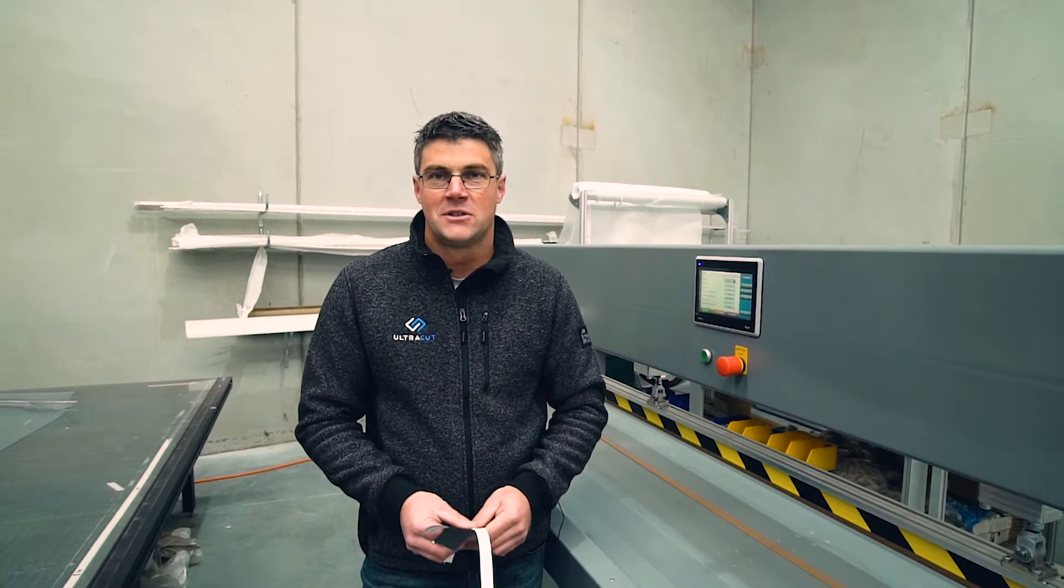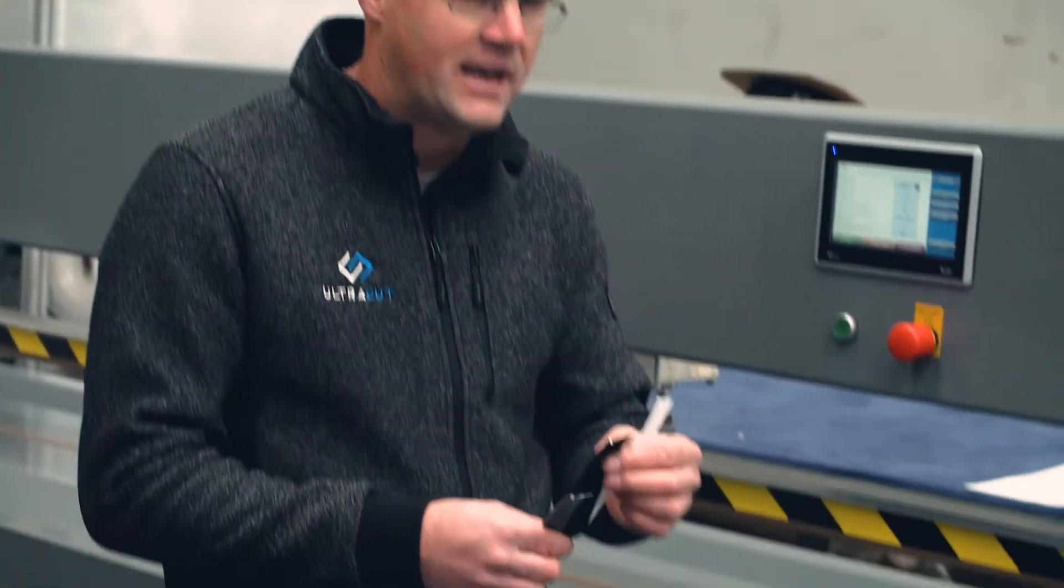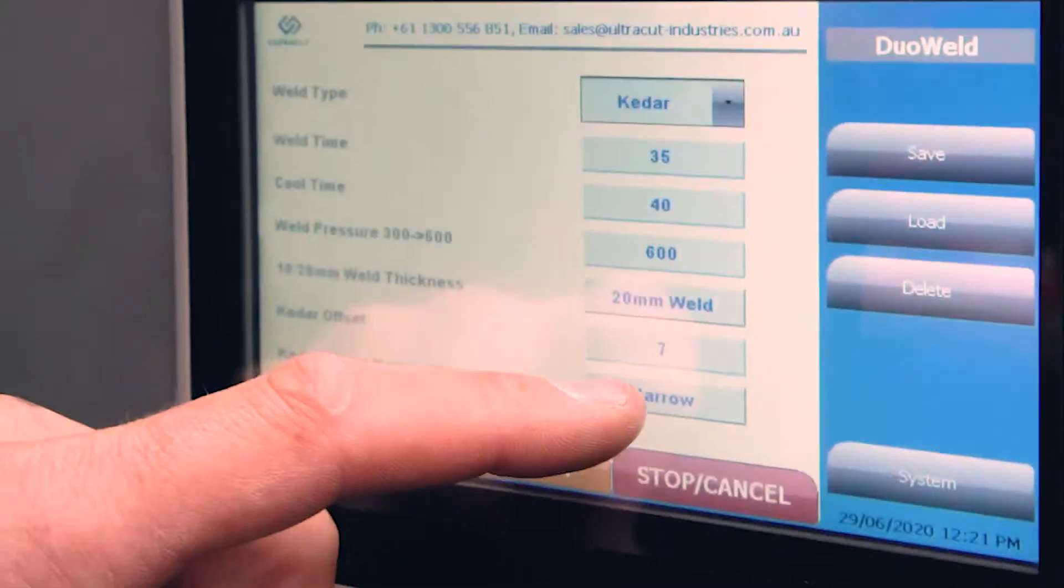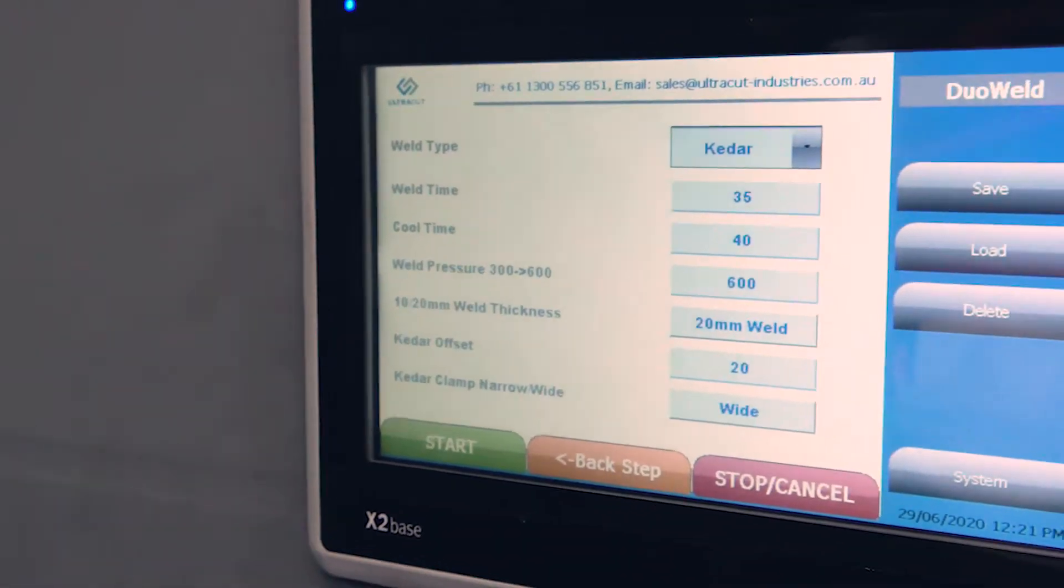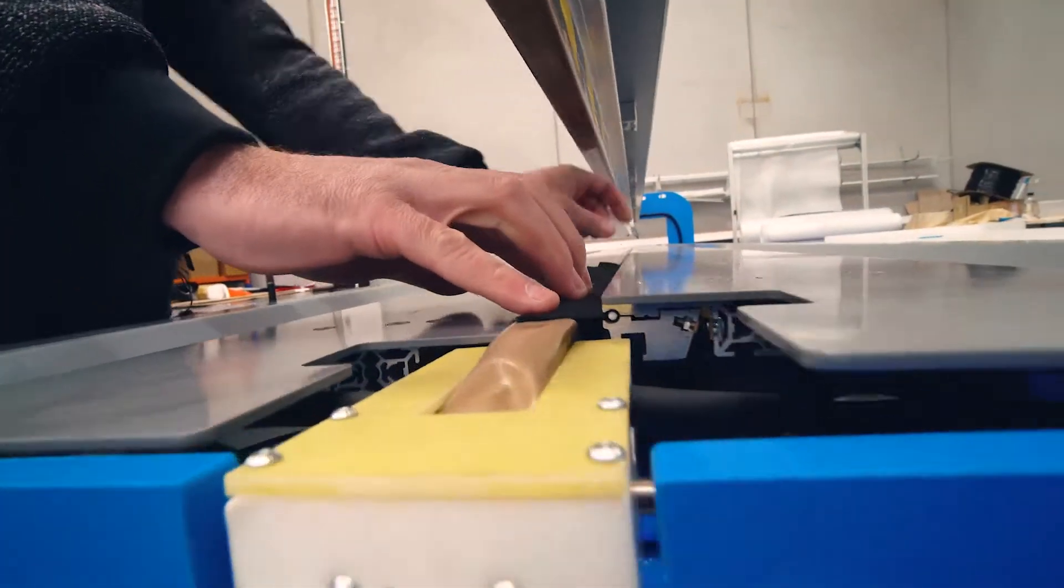Another key feature of our machine is the ability to hold different sized Kadars and splines. Adjustment for the size and offset is easily achieved by the touchscreen operation. You can see here the Kadar clamp can move back and forward depending on the size and offset of each Kadar.